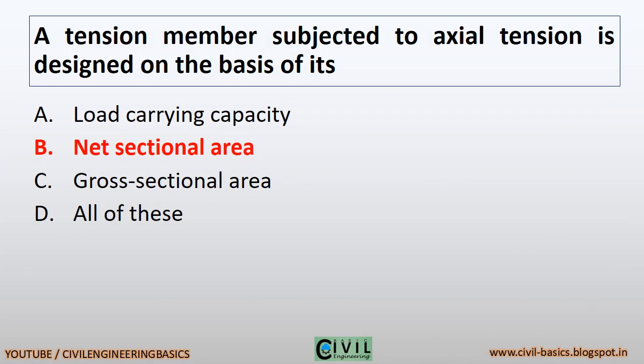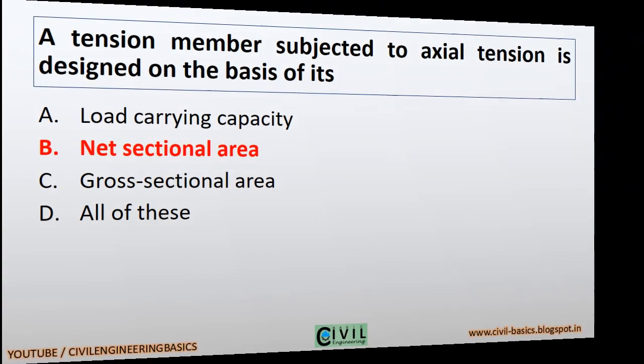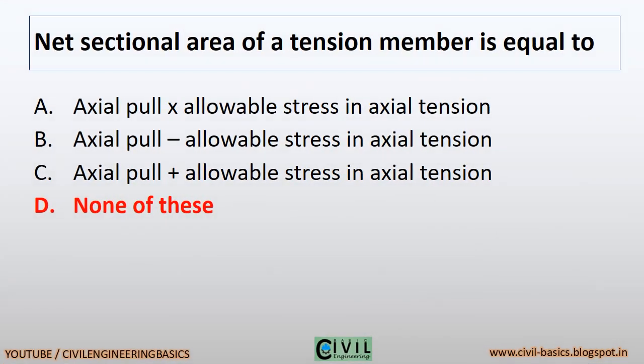A tension member subjected to axial tension is designed on the basis of its net sectional area. The net sectional area of a tension member is equal to — none of these options is right.